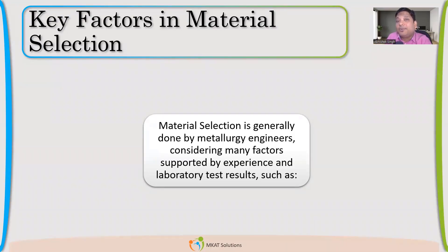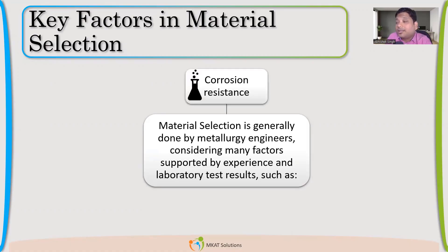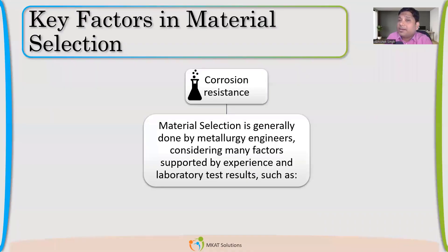Just now we discussed the type of fluid which we are going to store — that also has lots of influence. How the material behaves with that particular fluid is always dependent on the fluid. So what is the corrosion resistance of the material? When we compare that with the fluid, the environment, and the temperature, all will combinedly influence the corrosion rate. So if my material is getting corroded, I will have to provide a corrosion allowance. If the rate is very low, then 3, 4, or 5 mm corrosion allowance is sufficient for 10 to 20 years of service life.